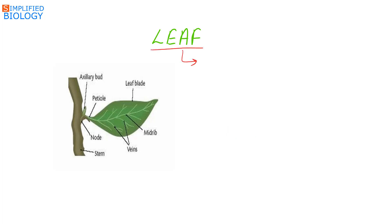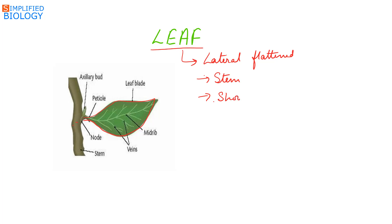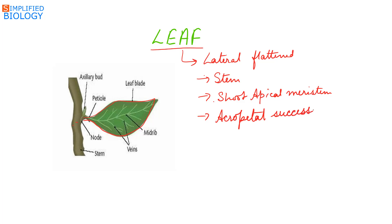Leaf is a lateral flattened structure, as we can see in this diagram. It develops on the stem, formed from the shoot apical meristem. The leaves develop in acropetal succession, meaning the lower leaf is the older one and the upper leaf is the younger one.